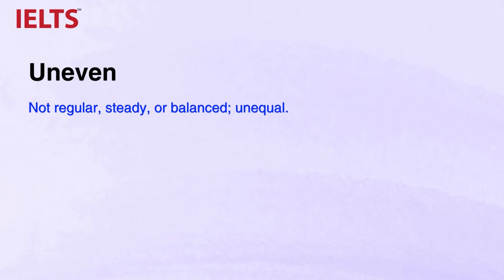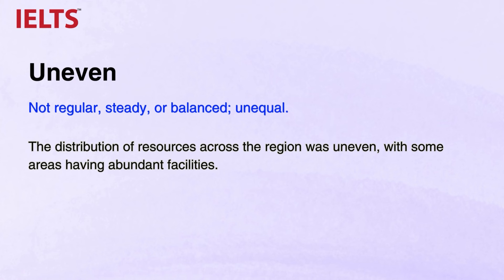And finally, last in the list: UNEVEN, meaning not regular, steady, or balanced — unequal. The distribution of resources across the region was uneven, with some areas having abundant facilities. Opposite to EVEN. Use this adjective to describe distributions or patterns that are irregular or unequal across the map, like uneven distribution of resources.